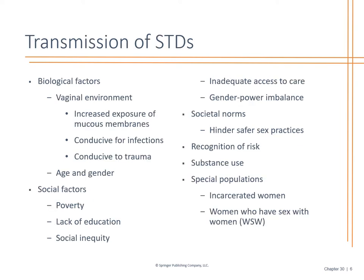Biological factors include the vaginal environment. With vaginal atrophy, there is increased risk because it is dry, leading to more irritation and increased risk for infection. Consider whether there is trauma, increased exposure, the patient's age, gender, and sexual partners. Looking at social factors — poverty, education, social inequality, and developmental delays — we see these often and must take a thorough history to understand what's going on.